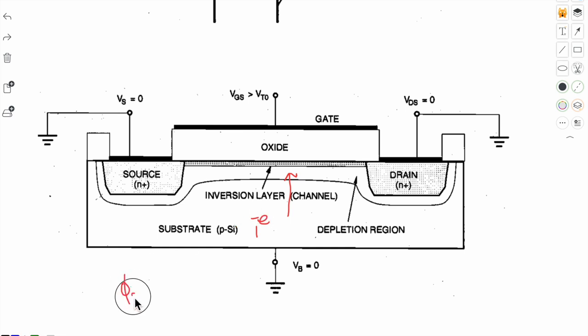When surface potential is minus 2ΦF, the inversion layer forms which is the channel. Inversion layer electrons are the mobile carriers.